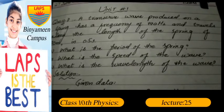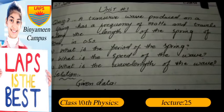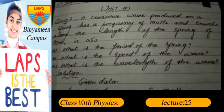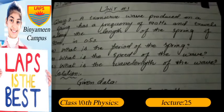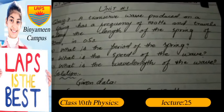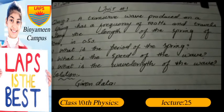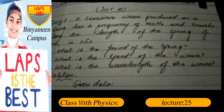the length of the spring of 90 meters in 0.5 seconds. Part A: What is the period of the spring? Part B: What is the speed of the wave? Part C: What is the wavelength of the wave? Solution: Given data: